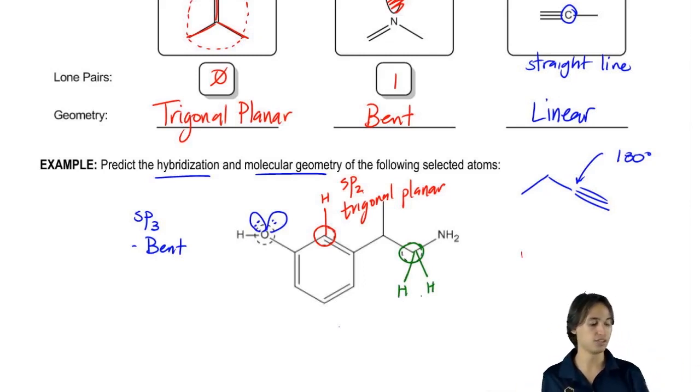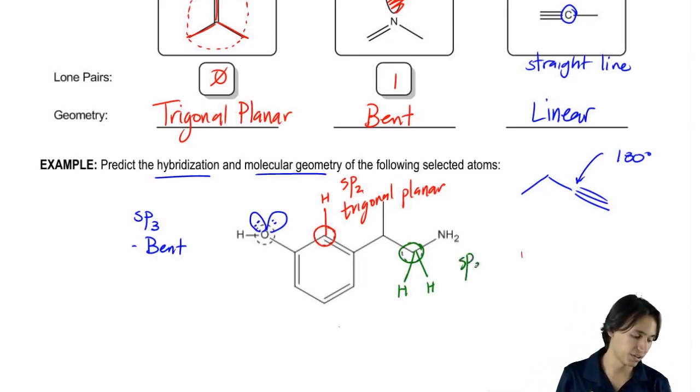So we have four different groups here. They're all atoms. There's no lone pairs, so this is going to be sp3 and it's going to be tetrahedral. Easy right?